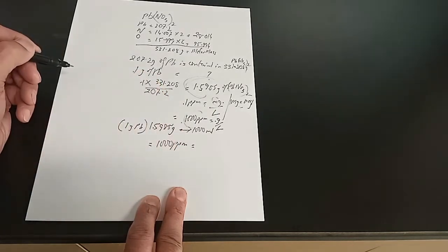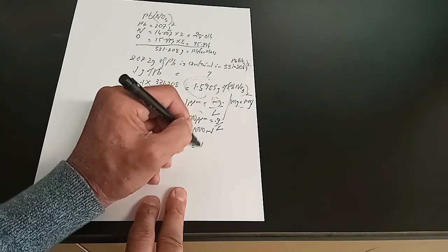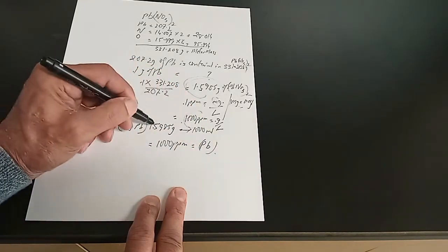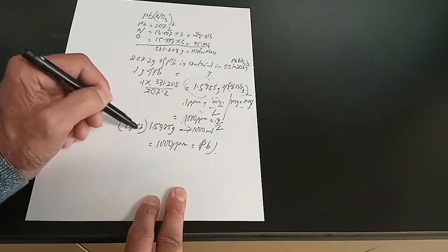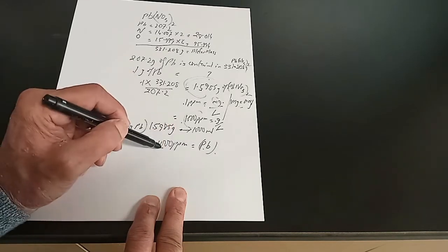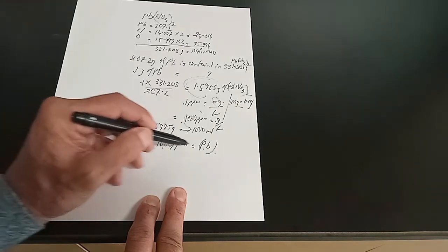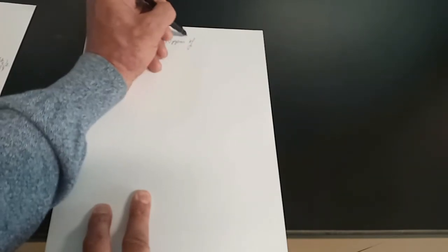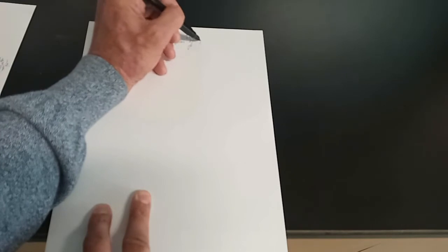It's 1000 ppm of lead because that's what we have taken. My objective is to make a 100 ppm solution or standard. So I want to make a 100 ppm manganese standard solution. Let's go about doing it the same way what we did earlier.